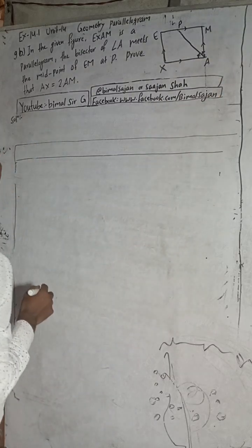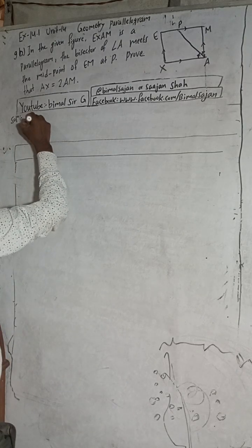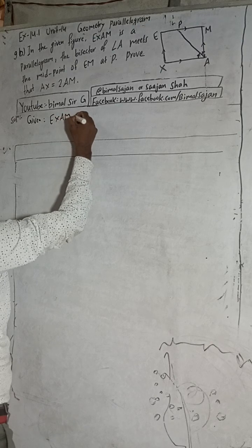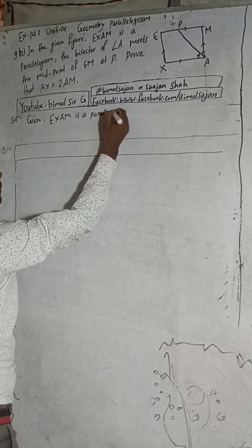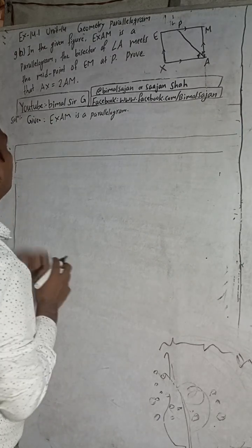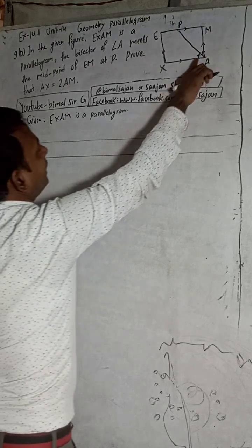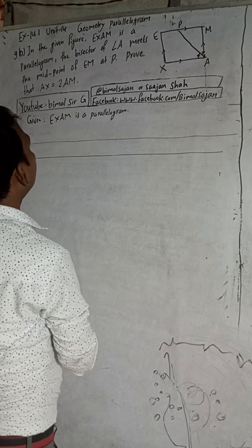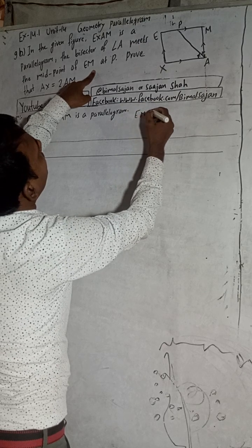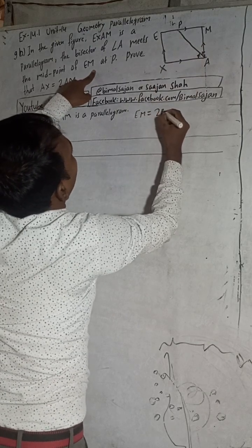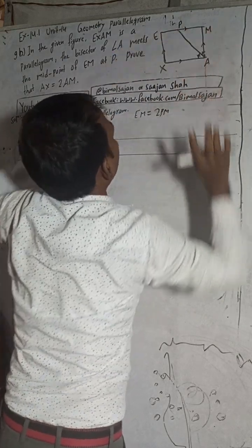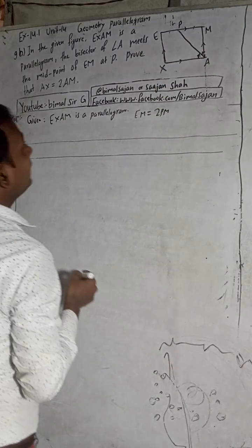Given: EXAM is a parallelogram, and the bisector of angle A meets the midpoint of EM at P. Since P is the midpoint of EM, EM is equal to 2PM.